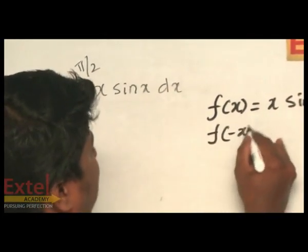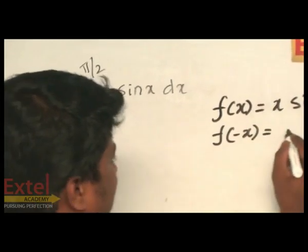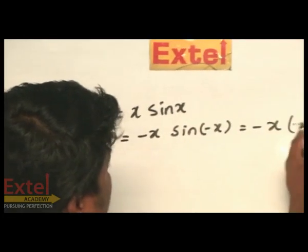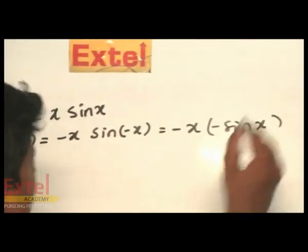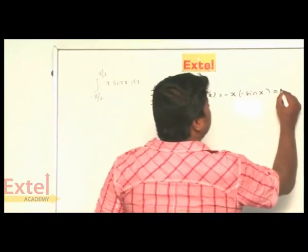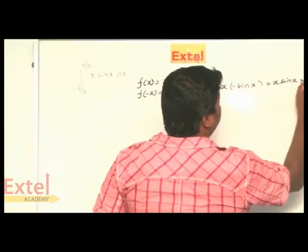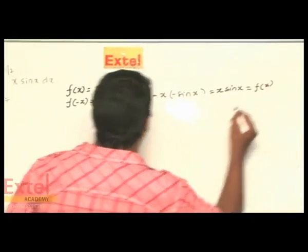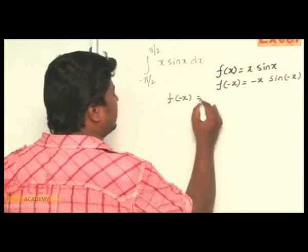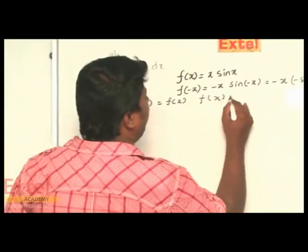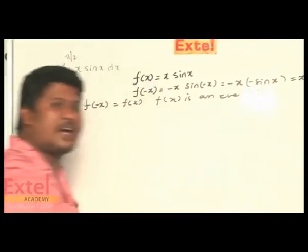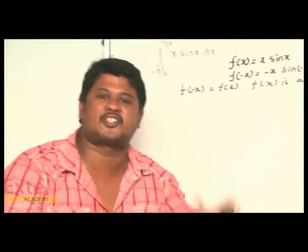Let us find out what is f of minus x. Then we can say minus x into sin of minus x. Therefore, minus x into minus sin x, because we know that sin(−θ) is minus sin θ. From this I can say it is equal to x sin x, therefore f(−x) = f(x), so f of x is an even function. We are concluding that the given function is an even function.